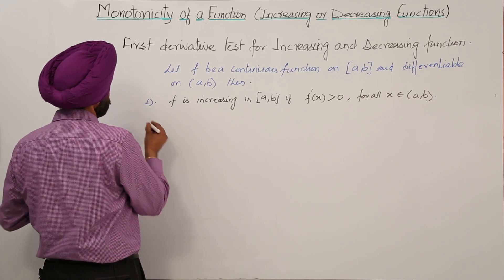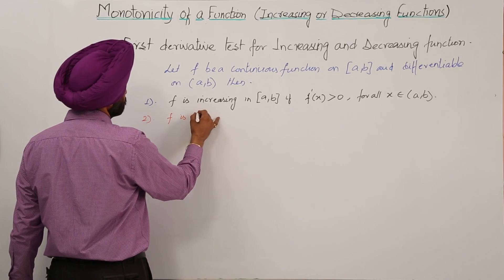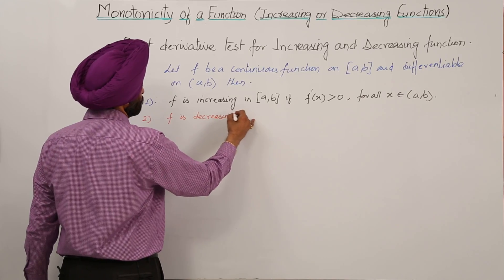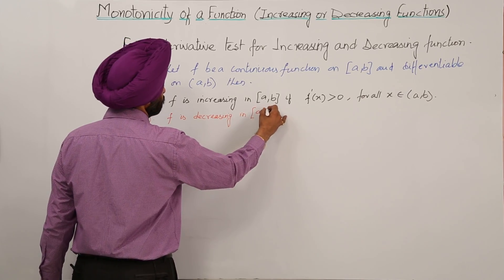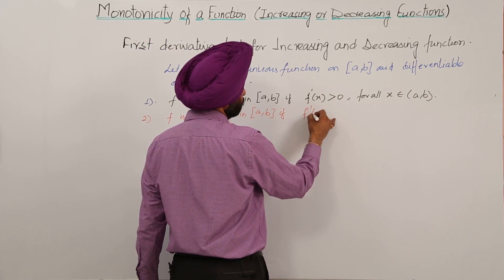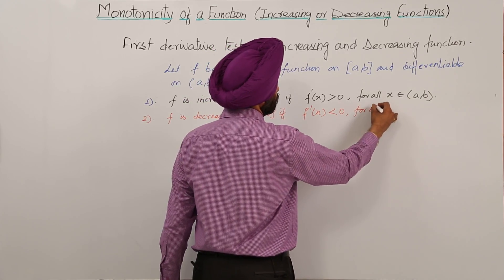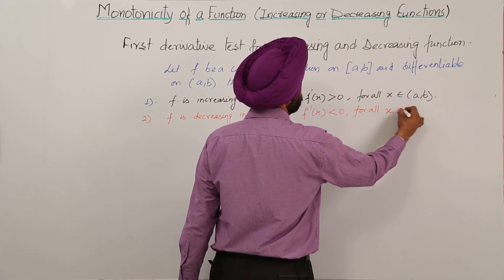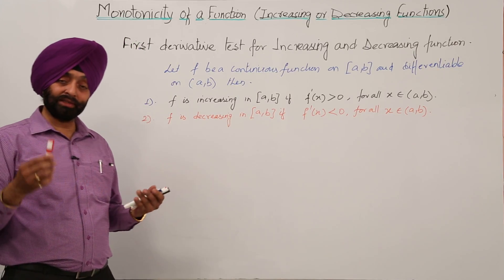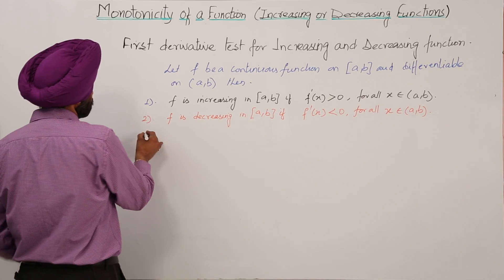Number 2: f is decreasing in [a,b] if f'(x) is less than 0 for all x belonging to (a,b). If the value is less than 0, then it is a decreasing function.